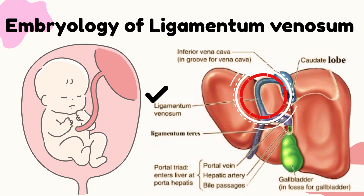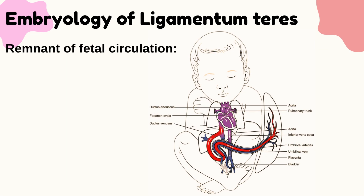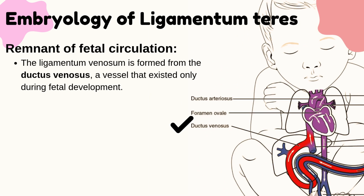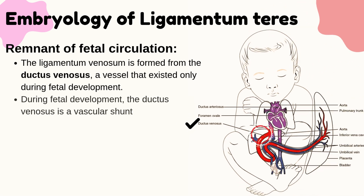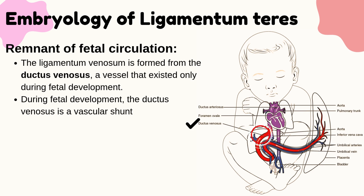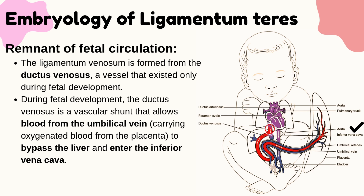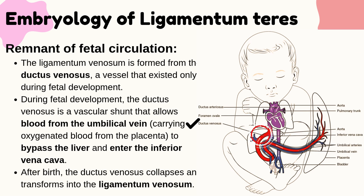The Ligamentum Venosum is a remnant of fetal circulation. It is formed from the ductus venosus, a vessel that existed only during fetal development. During fetal development, the ductus venosus is a vascular shunt that allows blood from the umbilical vein, carrying oxygenated blood from the placenta, to bypass the liver and enter the inferior vena cava. After birth, the ductus venosus collapses and transforms into the Ligamentum Venosum.